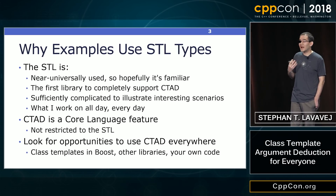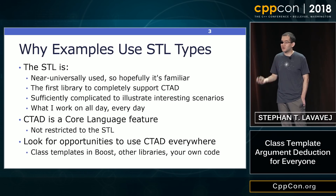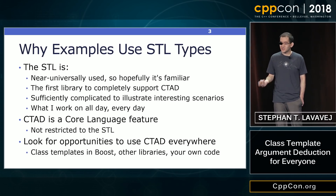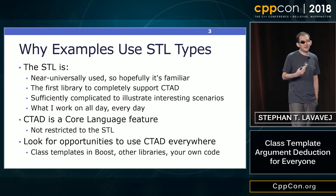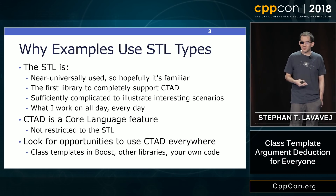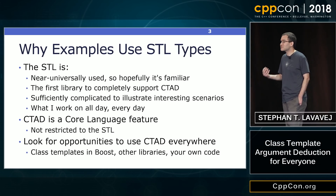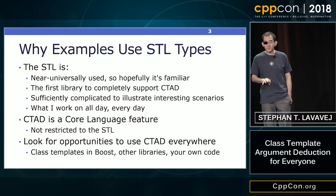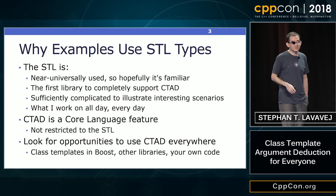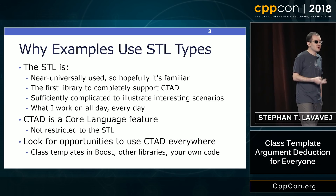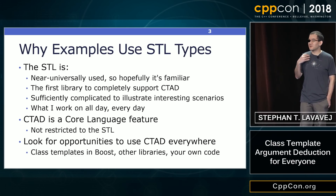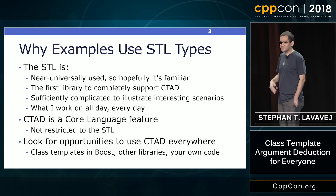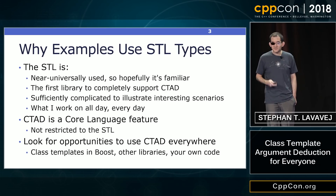Because the standard library is quite complicated, it's going to illustrate lots of interesting scenarios, like what happens when you need to do perfect forwarding and what happens when you have a range constructor. But because CTAD is a core language feature, by no means is it restricted to the STL. In fact, it will automatically work with many class templates. You'll be able to use it in Boost, your own libraries, Facebook's Folly library — especially as they implement deduction guides.